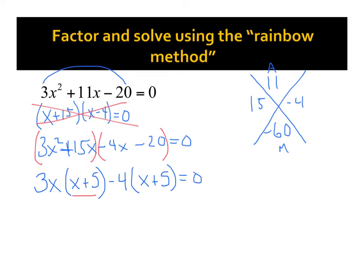You should get the same thing here and here. If you didn't get that, you did something wrong. Okay, keep moving. So I have my GCF, which is x plus 5, and then I've got my leftovers right there and there. So 3x minus 4.